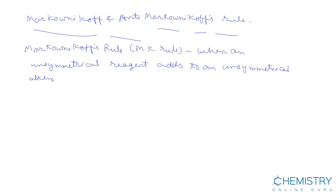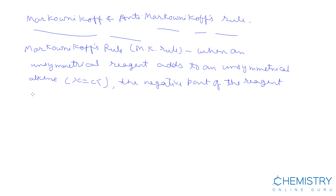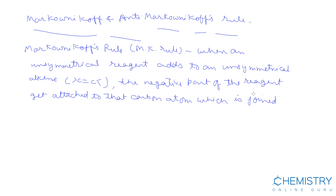where alkene means C double bond C, the negative part of the reagent gets attached to that carbon atom which is joined to the lesser number of hydrogen atoms.